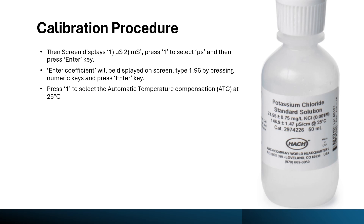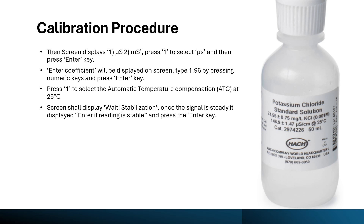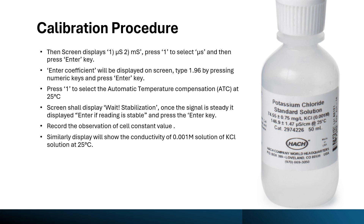After pressing enter there will be two options: option one for automatic temperature compensation at 25 degrees C, or option two for manual temperature. Press one for automatic temperature sensing. The screen will display weight stabilization and once the signal is steady it will display 'enter if reading is stable'. Once you get this message, press the enter key and record the cell constant value that appears on the display.